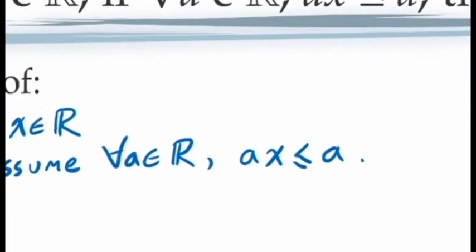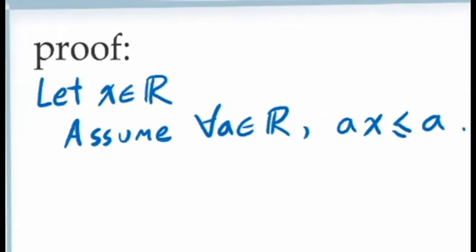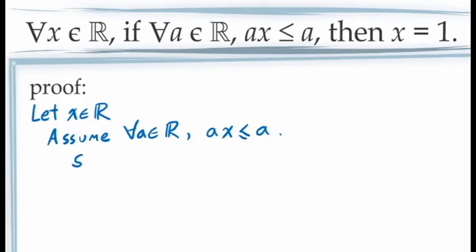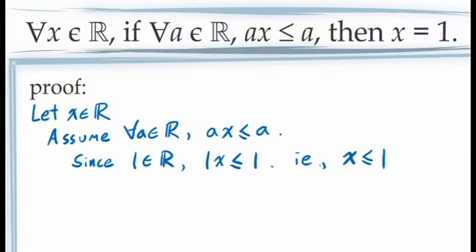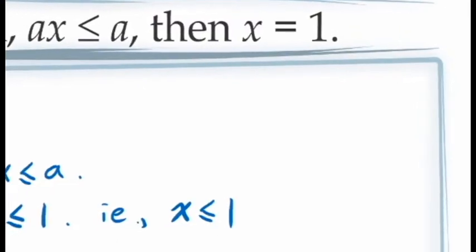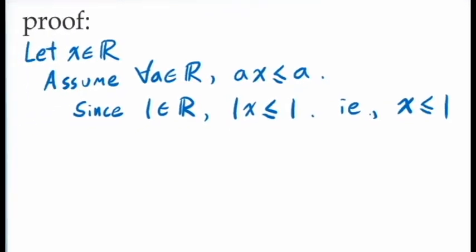Since our assumption contains a universal quantifier, we need to use the principle of universal instantiation. This means we need to choose a specific value of a — or multiple specific values — because we're given that the inequality a times x ≤ a holds for every real number. Since we're trying to prove x equals 1, it makes sense to try the real number 1. Since 1 is a real number and our assumption holds for all real numbers, it must hold for 1: so 1 times x ≤ 1, giving us x ≤ 1. This gets us halfway there, but we still need to eliminate the possibility that x is less than 1.